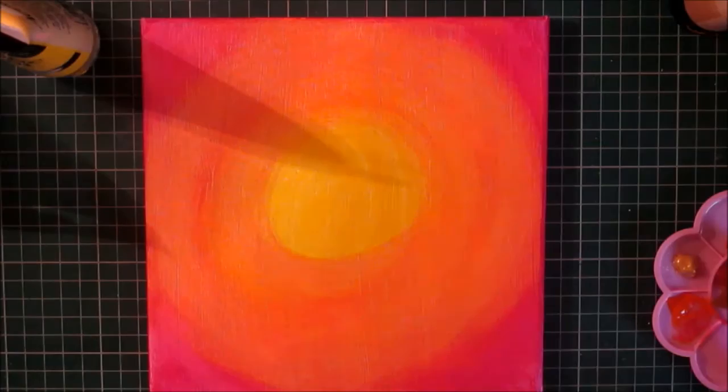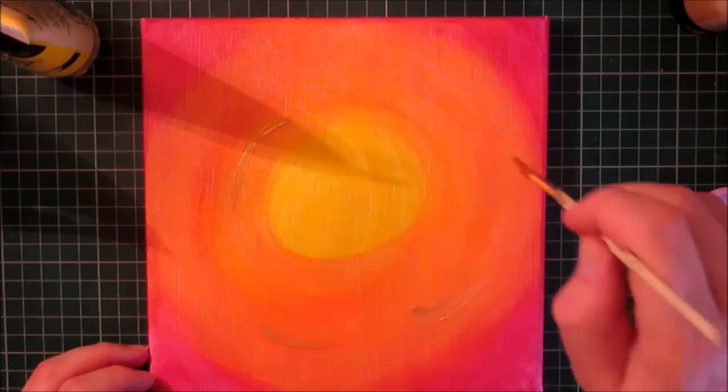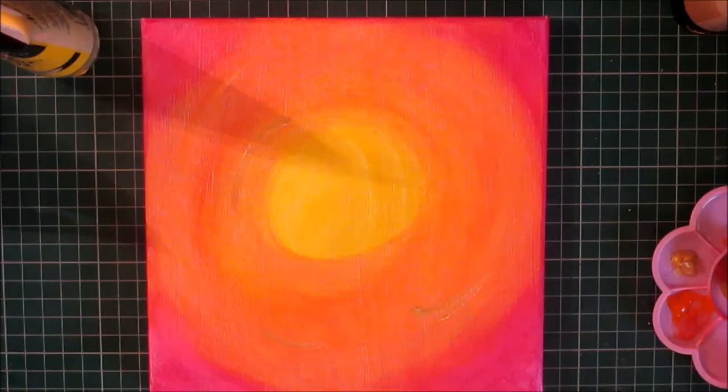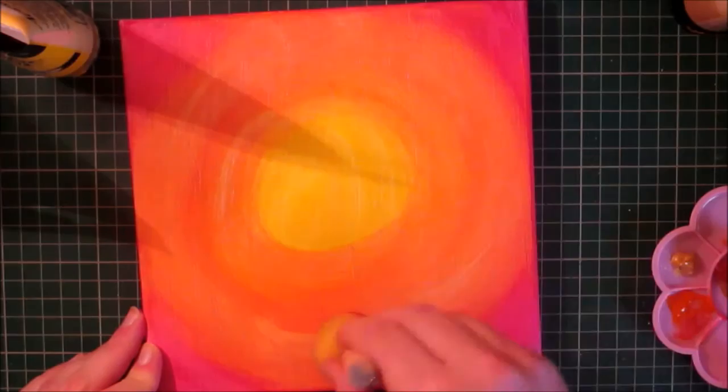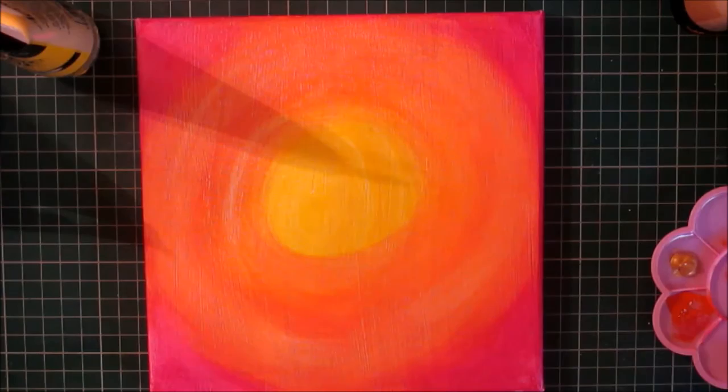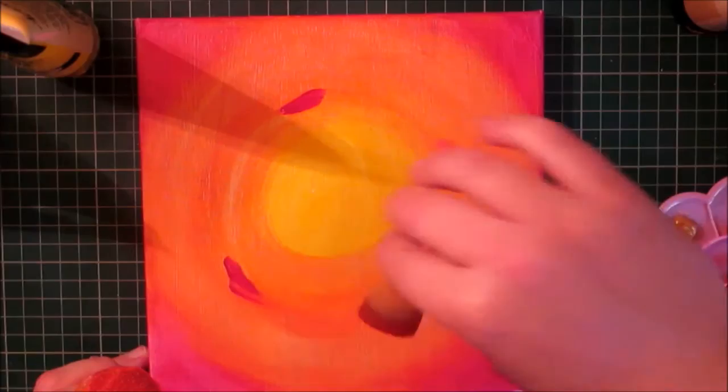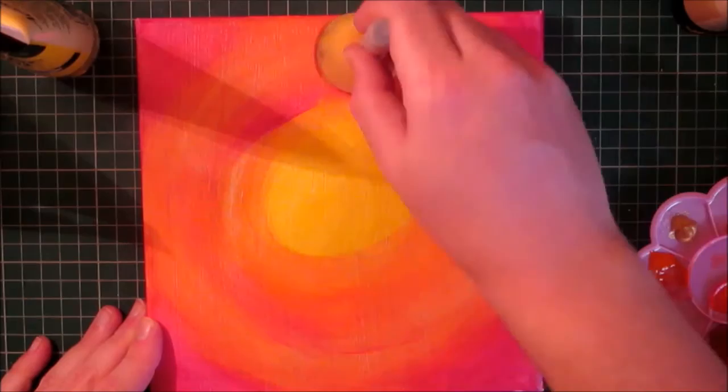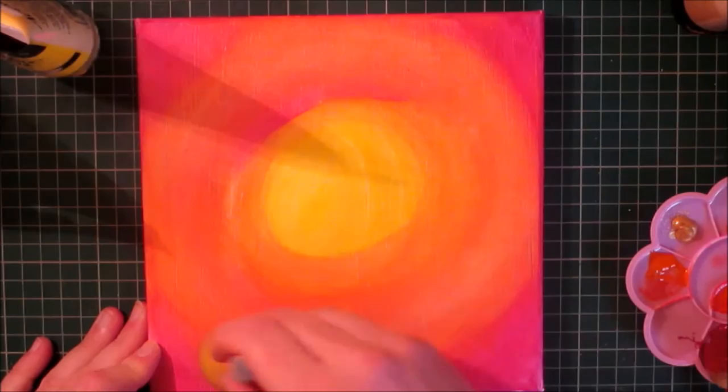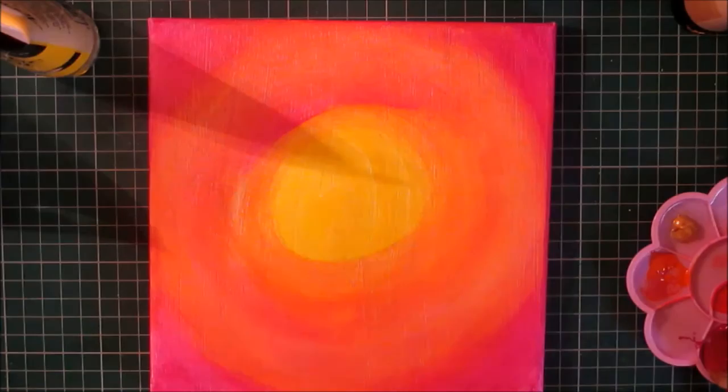And using the metallic gold, I am just going to put some strokes in a couple of places. Using the big dabber again, I am going to smooth those out. And the same thing with the crimson red. I am going to let that dry and then we will come back and we will do the owl.